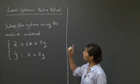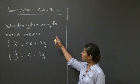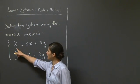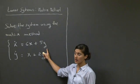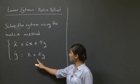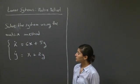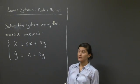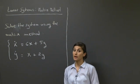Welcome back. So in this session, we're going to use the matrix method to solve this linear system of differential equations. These are x dot equals 6x plus 5y, and y dot equals x plus 2y. So why don't you take a few minutes to write down the system in matrix form and go through the matrix method to solve it, and I'll be right back.